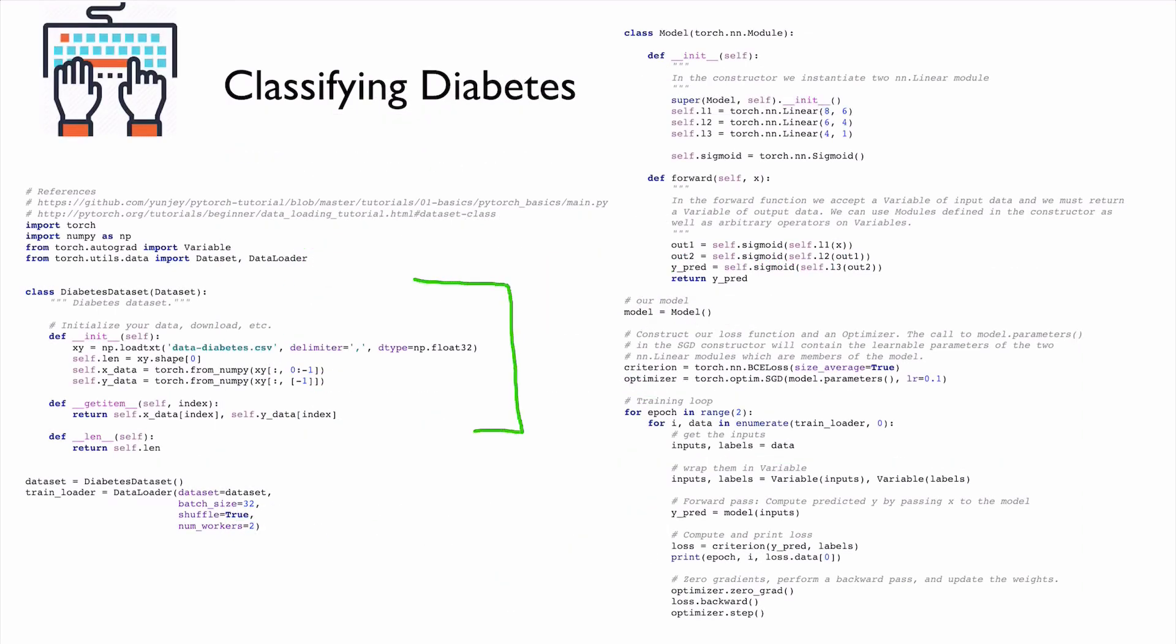This is our entire implementation. So, this part is our custom data loader. And then we create instance for that. And then we feed that to data loader. And then we create our training loader.